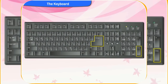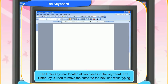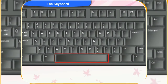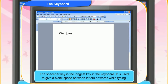What are these two big keys which have enter written on them? They are the enter keys. They are located at two places in the keyboard. The enter key is used to move the cursor to the next line while typing. Which is the long key at the bottom of the keyboard? That is the space bar key. It is the longest key in the keyboard. It is used to give a blank space between letters or words while typing.